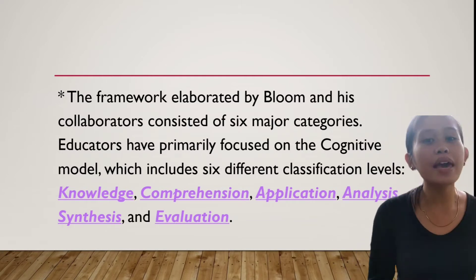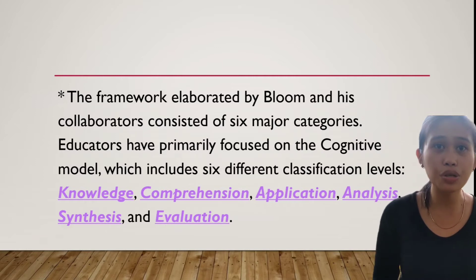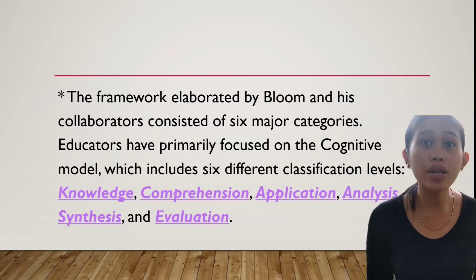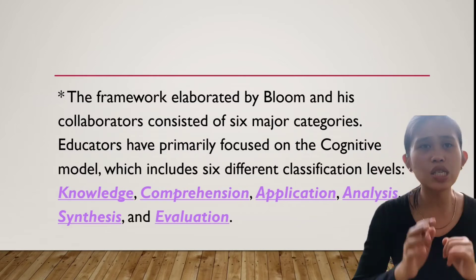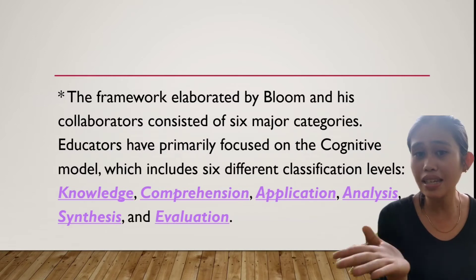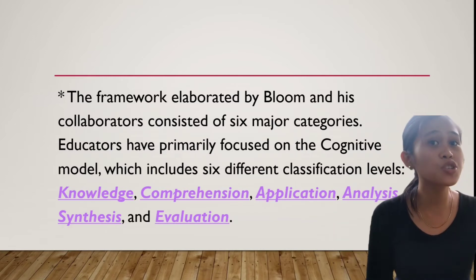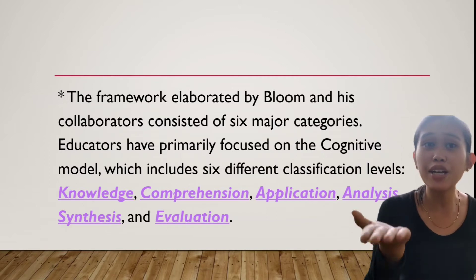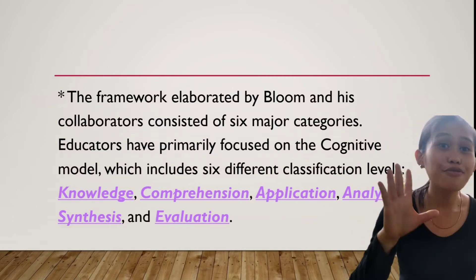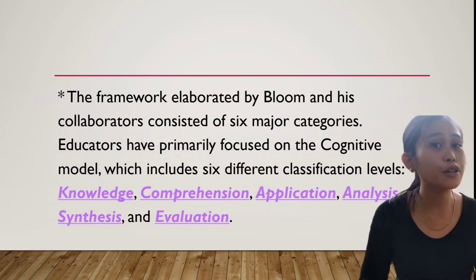The framework elaborated by Bloom and his collaborators consisted of six major categories. Educators have primarily focused on the cognitive model, which includes six different classification levels: number one, knowledge; number two, comprehension; three, application; four, analysis; five, synthesis; and number six, evaluation.